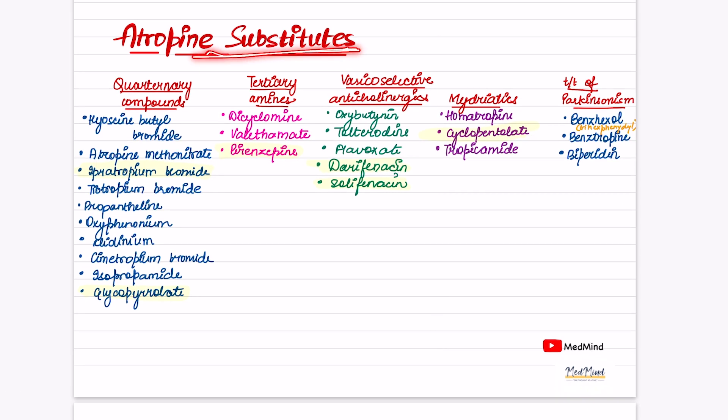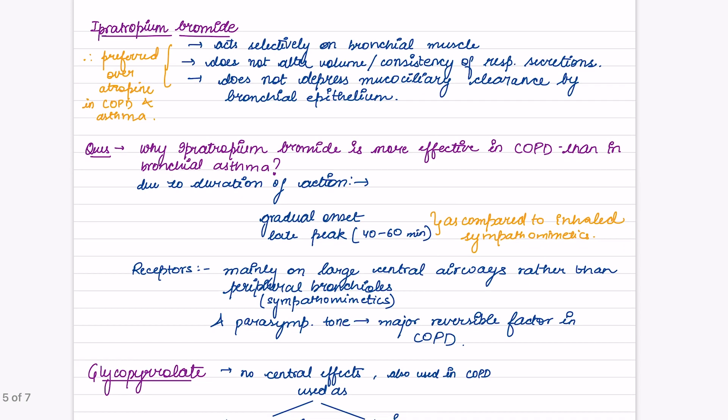Next we have atropine substitutes. We have quaternary compounds, tertiary amines, vesico-selective anticholinergics, mydriatics, and treatment of Parkinsonism. Quaternary compounds include propantheline, oxybutynin, tolterodine, fesoterodine, flavoxate, darifenacin, and solifenacin. Mydriatics are homatropine, cyclopentolate, and tropicamide. Anti-Parkinsonian drugs are benzhexol, benztropine, and biperiden.